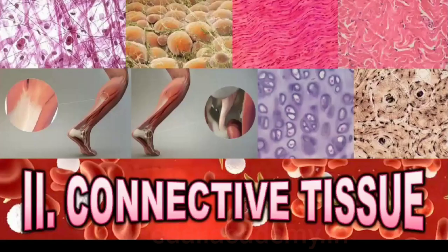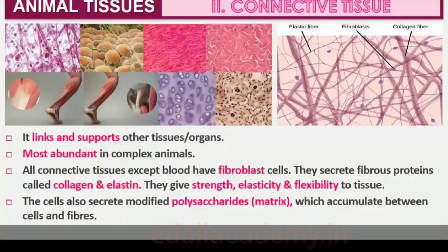Connective tissues are the most abundant and widely distributed in the body of complex animals, named for their special function of linking and supporting other tissues and organs. They range from soft connective tissues to specialized types including cartilage, bone, adipose, and blood. In all connective tissues except blood, the cells secrete fibers of structural proteins called collagen or elastin, which provide strength, elasticity and flexibility. These cells also secrete modified polysaccharides which accumulate between cells and fibers and act as matrix or ground substance.